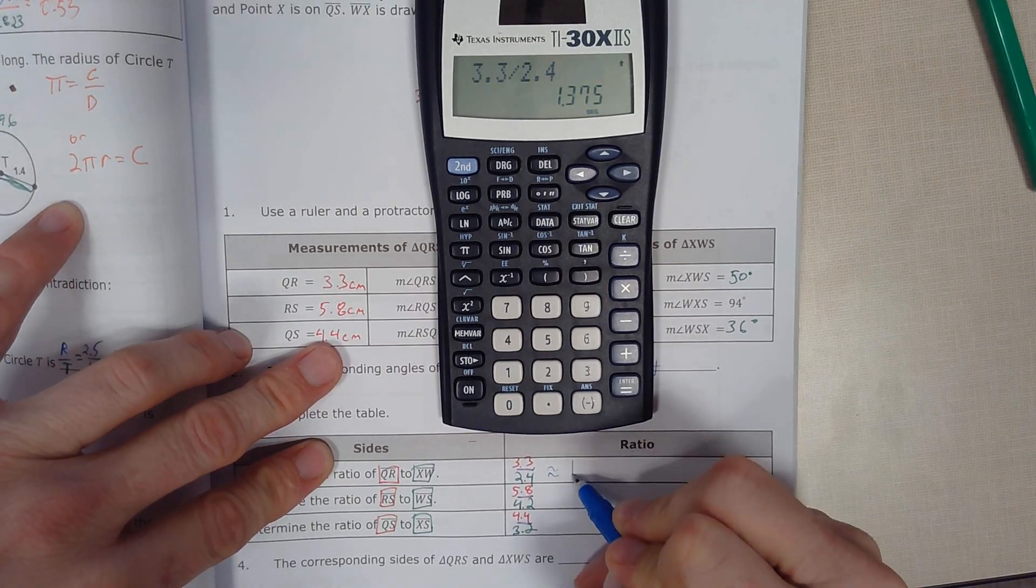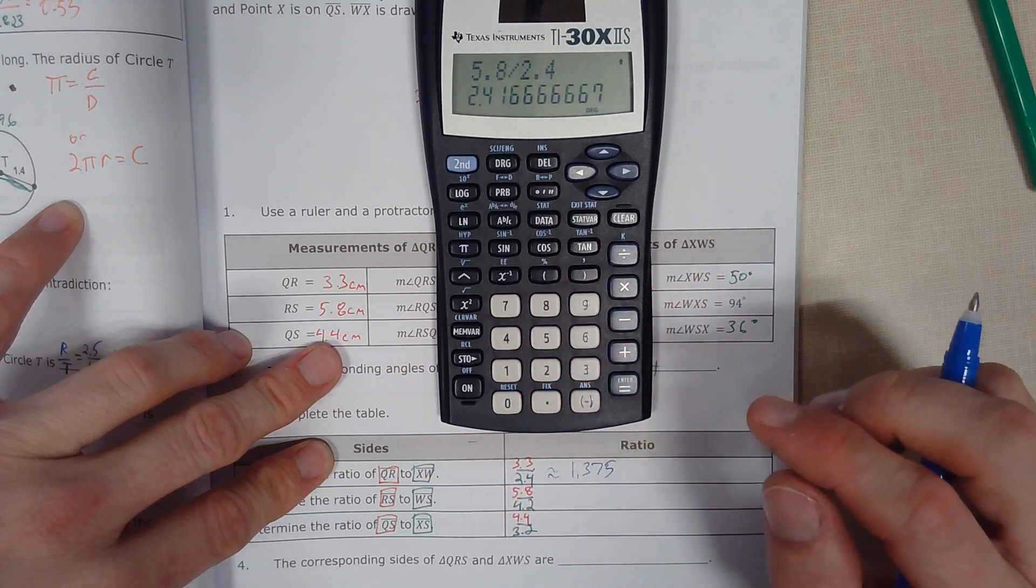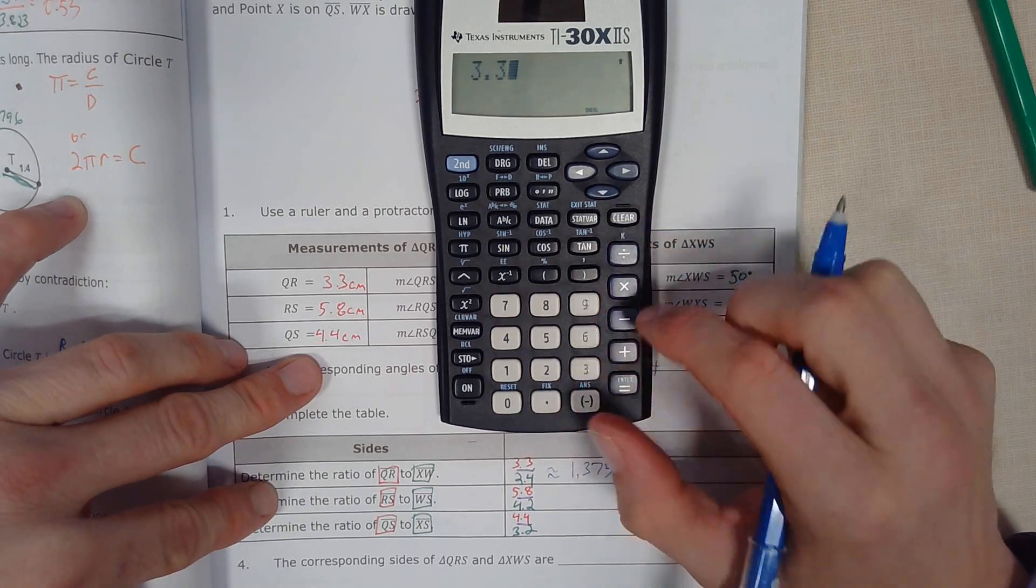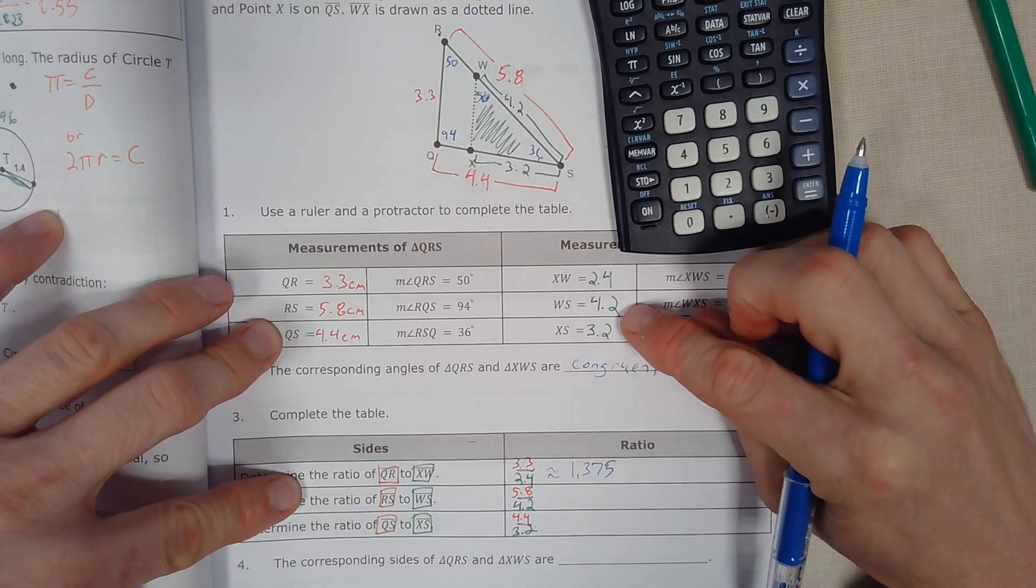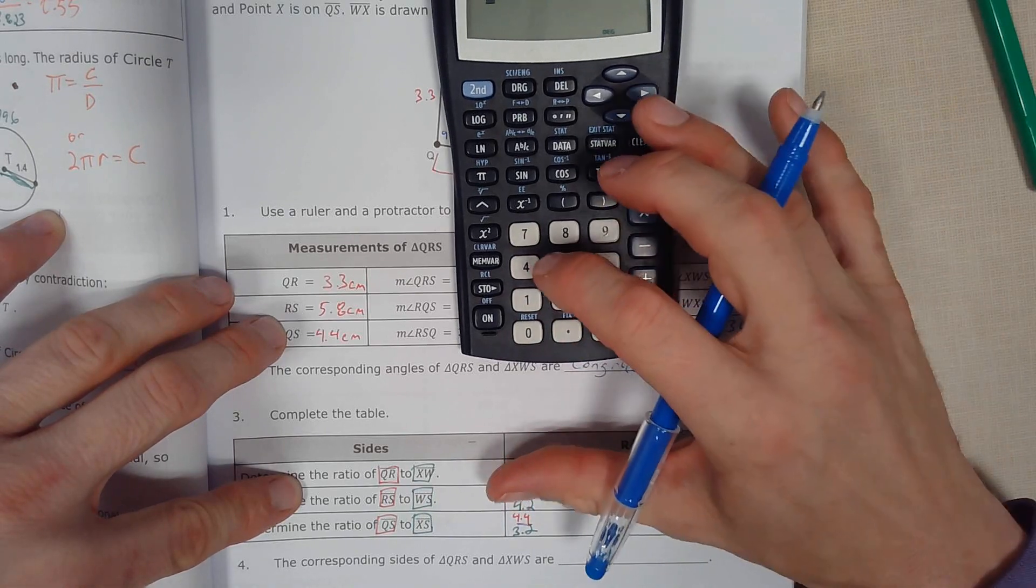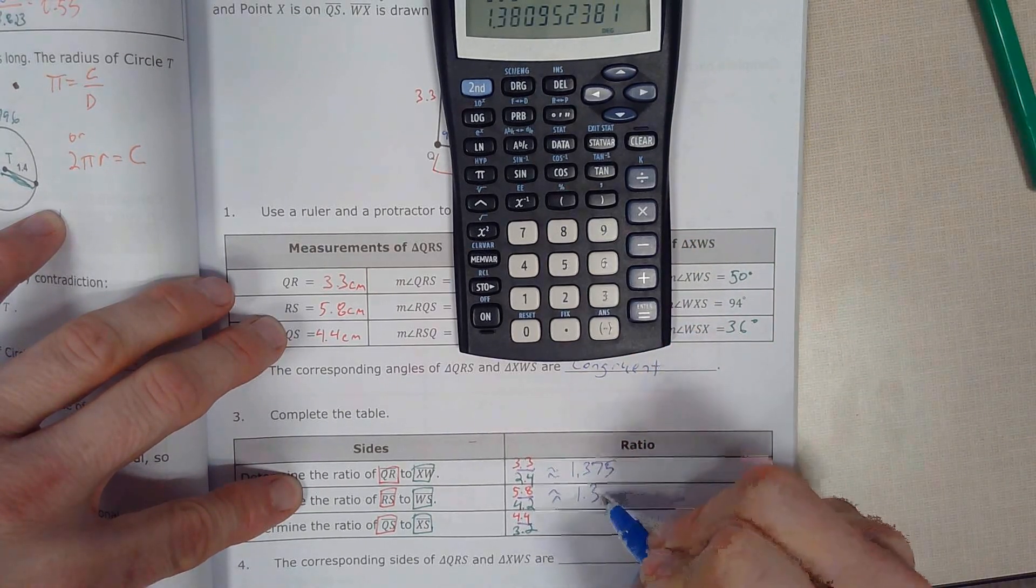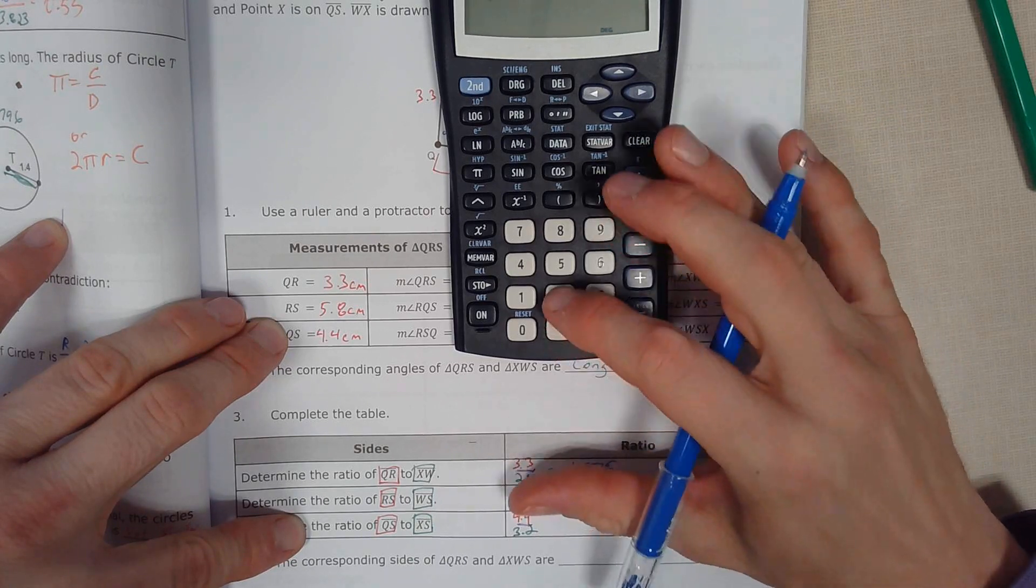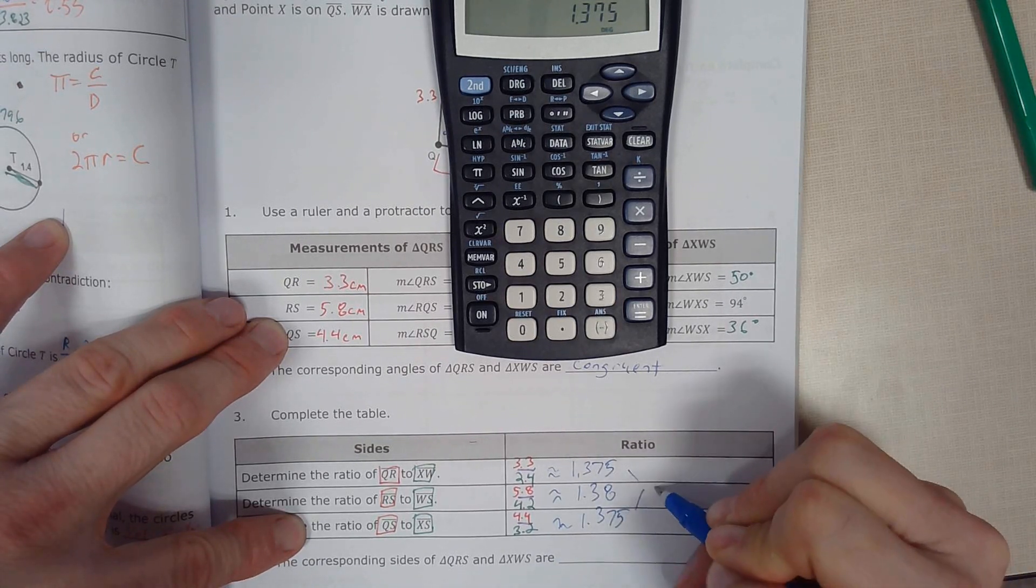3.3 divided by 2.4 equals approximately 1.375. 5.8 divided by 4.2 equals approximately 1.38. And then 4.4 divided by 3.2 is approximately 1.375. So they're all approximately the same.